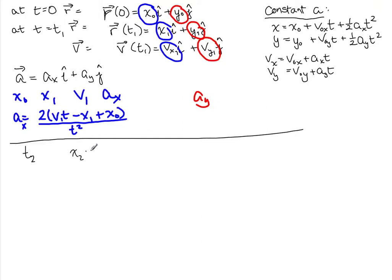So I'm going to use x0 plus v0 in the x direction t2 plus 1 half a in the x direction, which I now have, times t2 squared. But you can see that we're going to have to find v0 in the x direction in order to be able to do that.